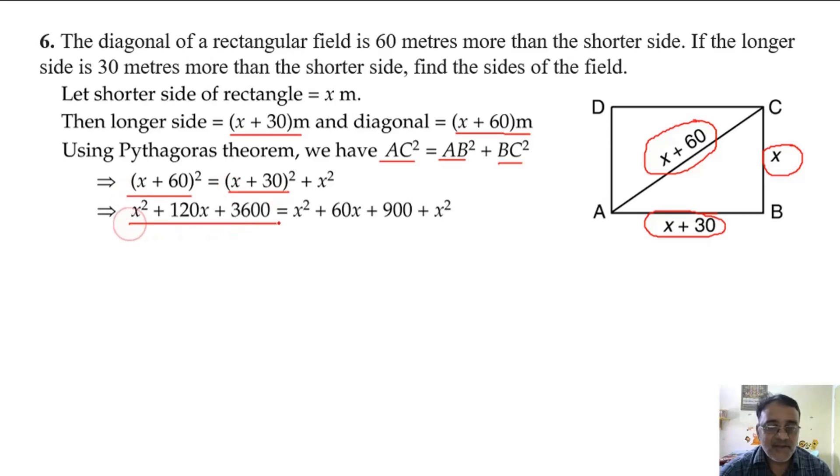We will get x² plus 120x plus 3600, and for this x² plus 60x plus 900 plus x².